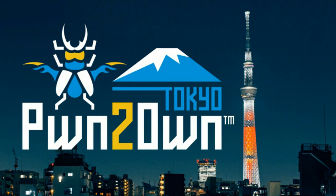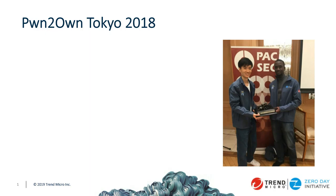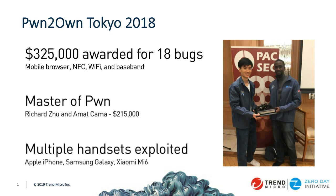Pwn2Own Tokyo is coming up with announcements in the next couple of weeks. Last year we awarded $325,000 for 18 zero-days, with the same Master of Pwn team — Richard Zhu and Amat Kama. In those two events combined, they won over half a million dollars, a car, several laptops, big trophies, and cool jackets. Multiple handsets were exploited including the iPhone, Galaxy, and Xiaomi Mi6. This year we're expanding further with additional consumer devices and handsets.